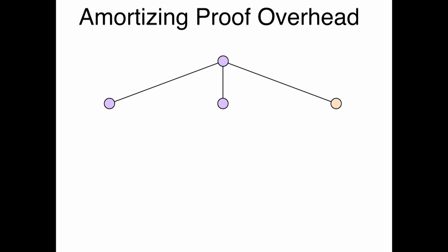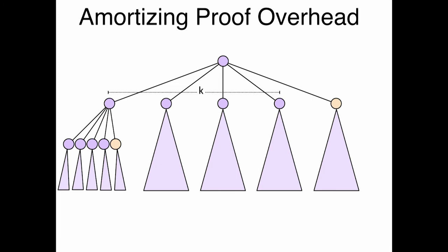So the idea is to amortize the proof overhead by making the tree have much larger arity. So think instead of having an arity of three, we're going to have arity K. So there's going to be much more computation steps in every node and only one proof, and the cost of the proof will not grow by much, but the computation will be much more expensive. So the tree is going to be much more shallow and much wider, and the depth of the tree is going to be log base K of T instead of log base two of T.